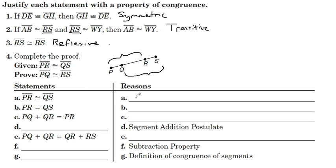All right, our first statement PR is congruent to QS. That is always given. First statement is almost always given.